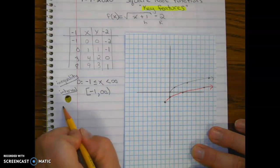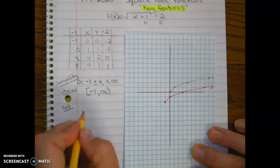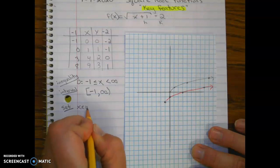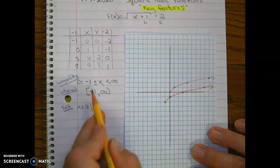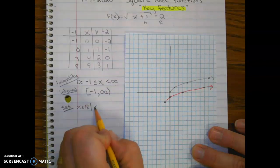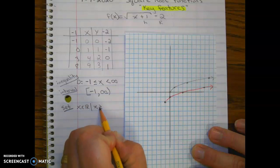And then there's set notation. That's where we write x is an element of all real numbers such that, and then we could either write this inequality here, or we could just say x is greater than or equal to negative one. And we'll put it in brackets or braces.